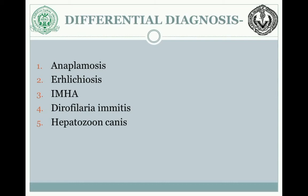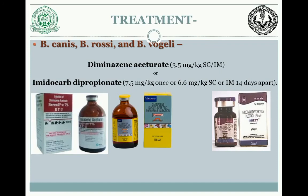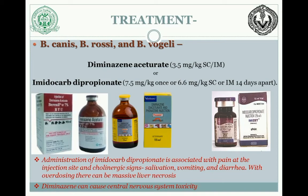For treatment of Babesia canis, Babesia rosae, and Babesia vogeli, we can use diminazene aceturate at 3.5 mg/kg body weight subcutaneously or intramuscularly. Alternatively, imidocarb dipropionate can be used at 3.5 mg/kg or 6.6 mg/kg body weight, given 14 days apart, subcutaneously or intramuscularly. Imidocarb dipropionate inflicts pain at the injection site, so atropine sulfate is administered prior to imidocarb. Diminazene can also cause central nervous system toxicity, so care is required.